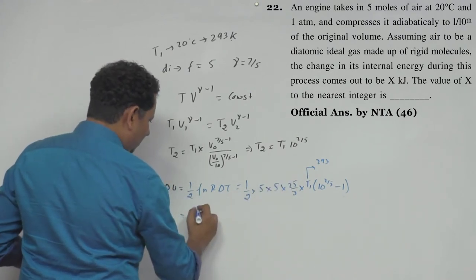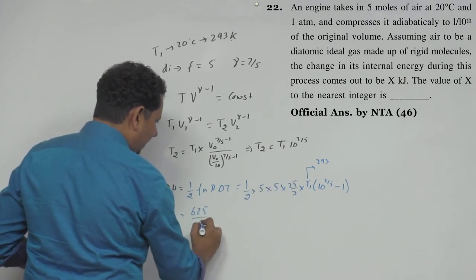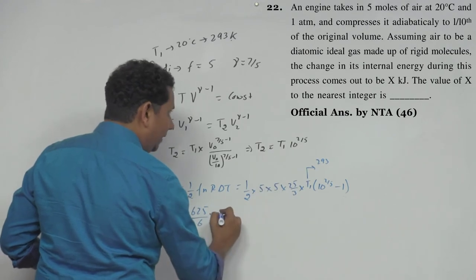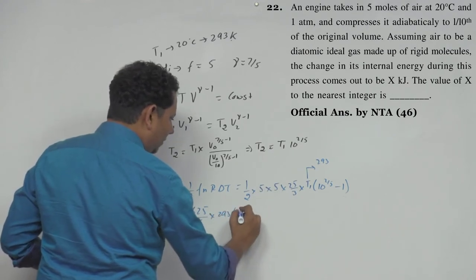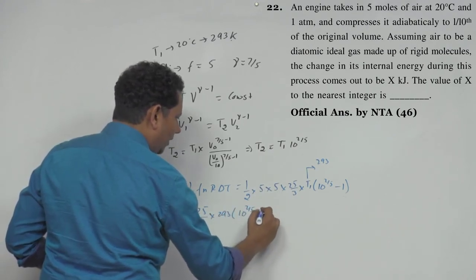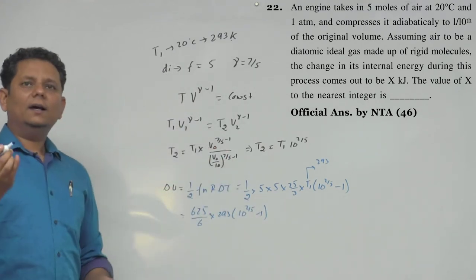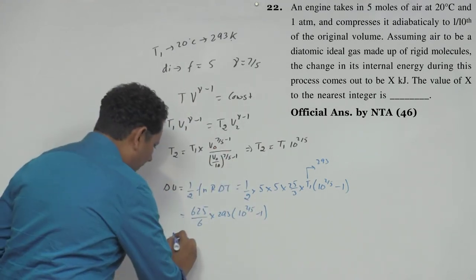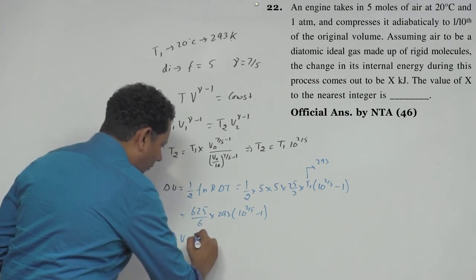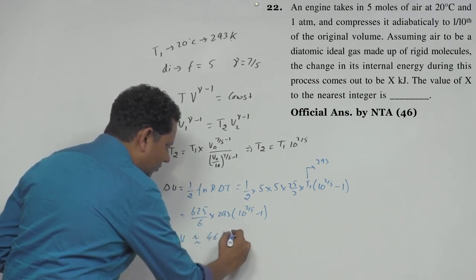This will be 625/6 × 293 × (10^(2/5) - 1). All the best calculating this. When we solve this, delta U comes out to approximately 46 kilojoules.